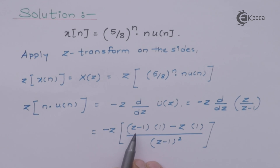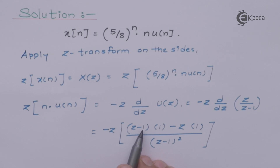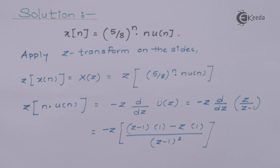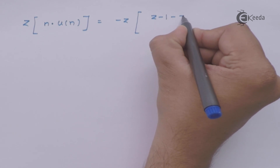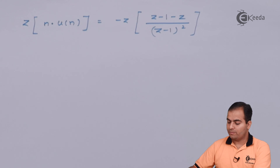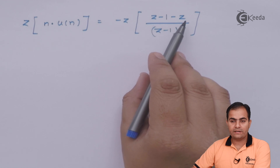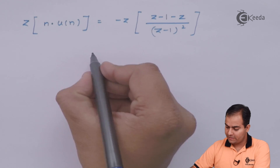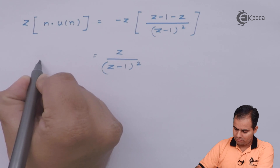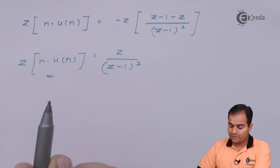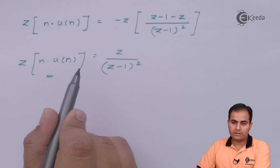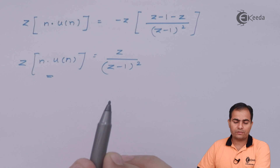Opening the bracket: z−1−z gives z cancelling, leaving −1 in the numerator. Outside the bracket we have −z, so −z times −1 gives +z. This is the result of the first-order differentiation of the unit step. Remember this formula: z/(z−1)^2, as it is frequently used in both Z-transform and inverse Z-transform problems.